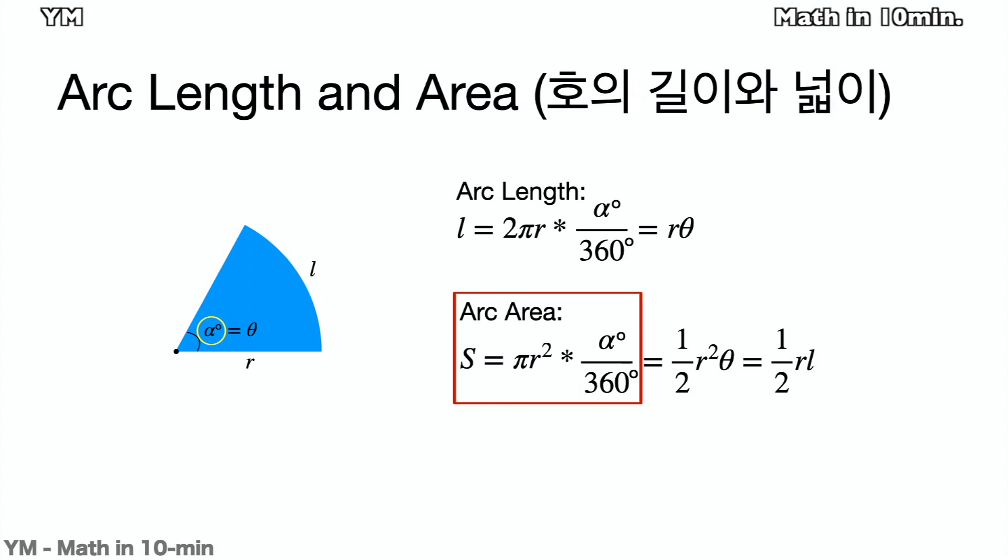The area is pi r squared times alpha degrees over 360 degrees in degrees. But in radians, it becomes 1 over 2 times r squared times theta, or 1 over 2 times r times l, where l is the arc length.